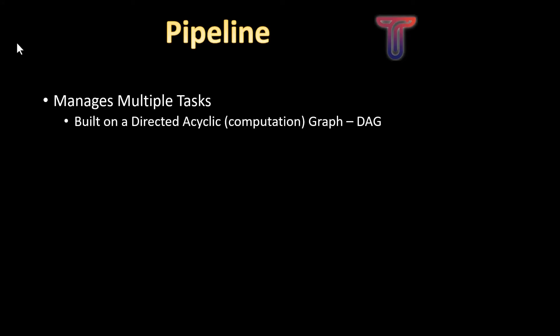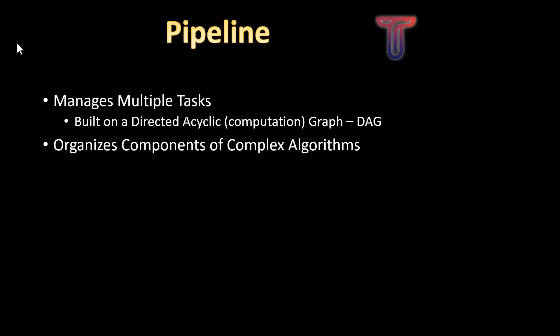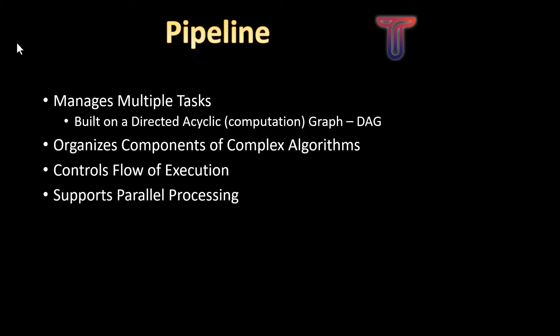A pipeline manages multiple tasks. It's built as a directed acyclic computation graph — a DAG. It organizes components of complex algorithms, controls the flow of execution, and supports parallel processing where appropriate.